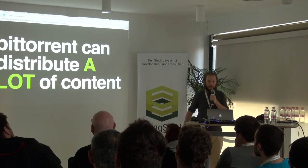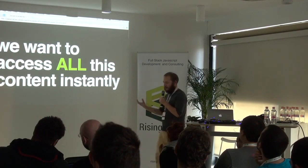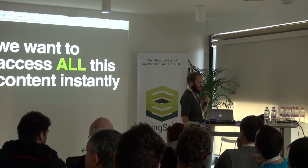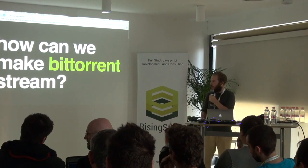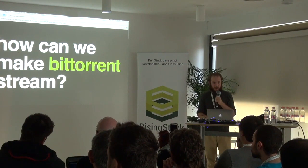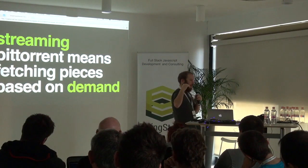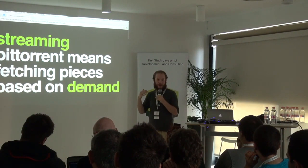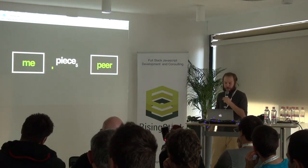The cool thing is we can use this to distribute a lot of data, and BitTorrent already does that. The problem is we want to be able to fetch this data instantly — we don't want to wait for an entire gigabyte to download on a slow connection. We just want to stream it. So how can we make BitTorrent stream? When you think about streaming, we have a file based on pieces. Streaming just means fetching the right piece at the right time. If we're interested in the first part of the file, we just fetch the first piece, then the next piece, and so on. On a high level, it's actually pretty simple.